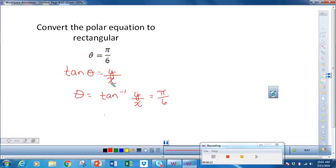We know that tan θ = y/x, and that θ = tan⁻¹(y/x), which is π/6. I don't think I need that part, though. I don't need to know that. I just need to know that tan θ = y/x. So therefore, y/x = tan(π/6).